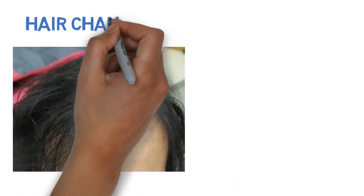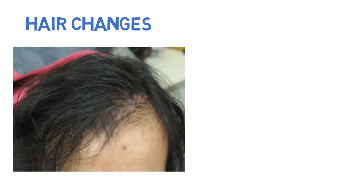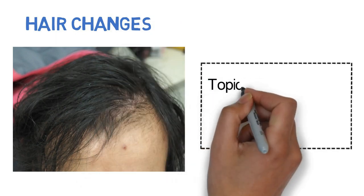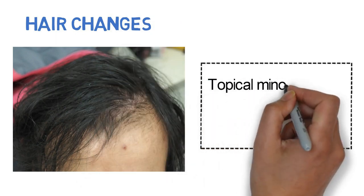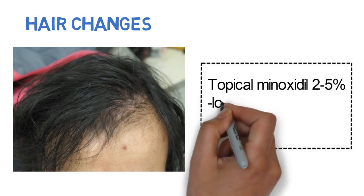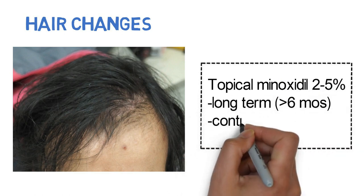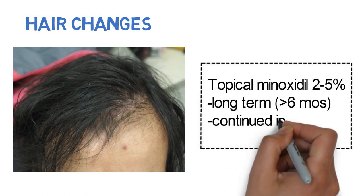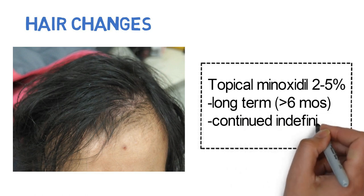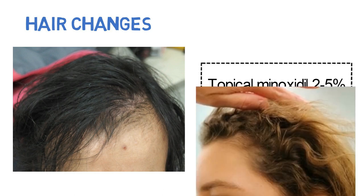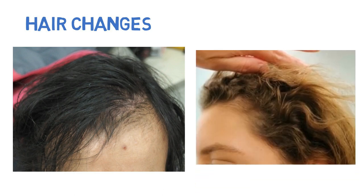Non-scarring alopecia can be treated with topical minoxidil 2–5%. Long-term treatment, usually 6 months or more, is required to observe any improvement. Treatments must be continued indefinitely to maintain these improvements. Other changes seen in the hair with BRAF inhibitors include curling of the hair.